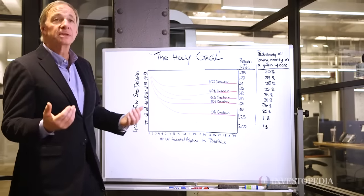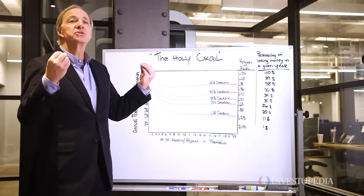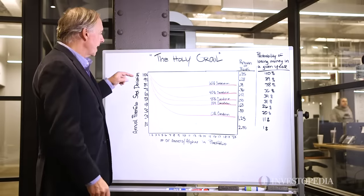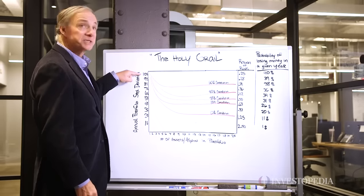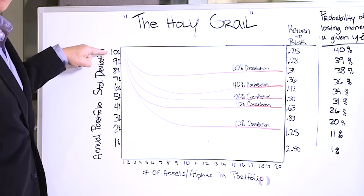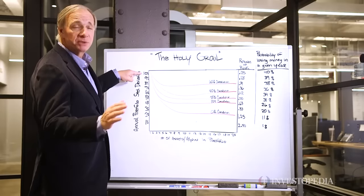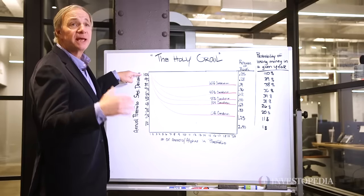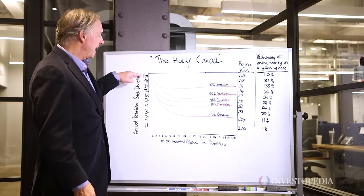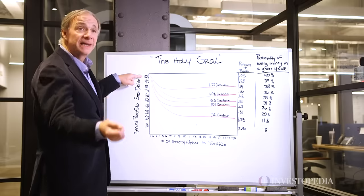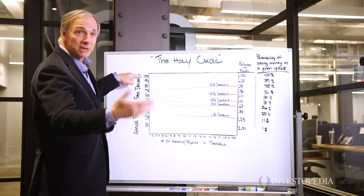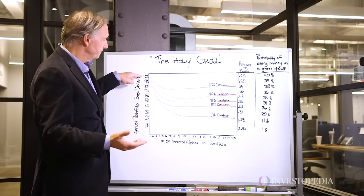To use an example: let's assume you have — to make it simple — a return that has a 10% risk, and we'll call risk standard deviation. And let's say it had a 10% return. And let's say I add in another asset, another return stream.